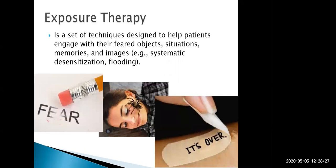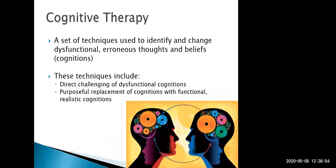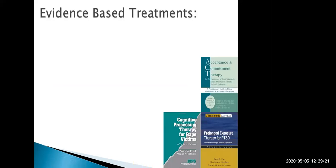One of the most effective treatments, particularly for PTSD but also for a range of anxiety conditions, is exposure therapy — a set of techniques designed to help people approach rather than avoid feared objects, situations, or even memories of trauma, flooding the system in a safe, strategic way to build resilience and reduce avoidance. The next highly effective approach is cognitive therapy, which directly identifies and challenges dysfunctional thoughts keeping patients stuck, replacing them with more functional or realistic beliefs about themselves, others, and the world.